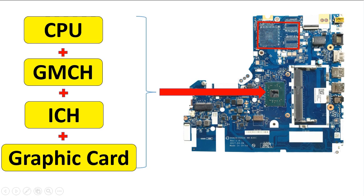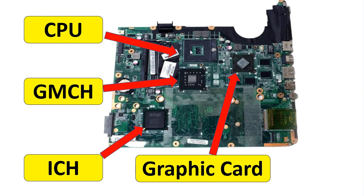In the old motherboard, the chipsets are separated. In contrast, a newer improved motherboard has just one chipset where the CPU, the GMCH (Graphic and Memory Control Hub), the ICH (Input/Output Control Hub), and the graphic card are all integrated into a single chip. This is a very enhanced motherboard design.